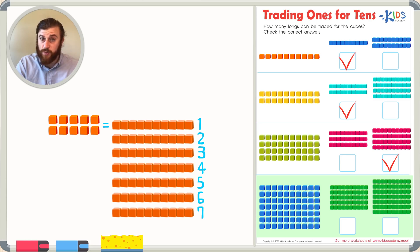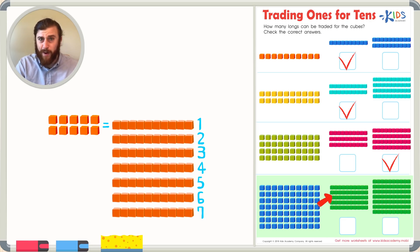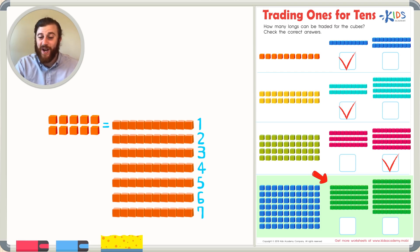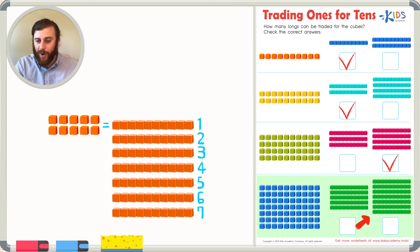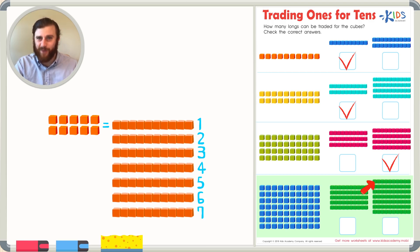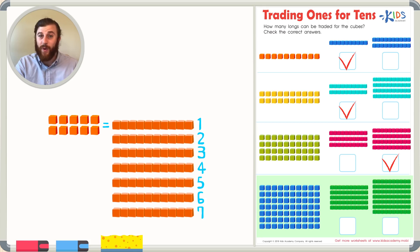In the first answer choice there are one, two, three, four, five longs — that's not correct. Our second answer choice must be correct. Let's count just to make sure: one, two, three, four, five, six, seven rows of longs, or 70 cubes in total. We can go ahead and check that as our correct answer choice.